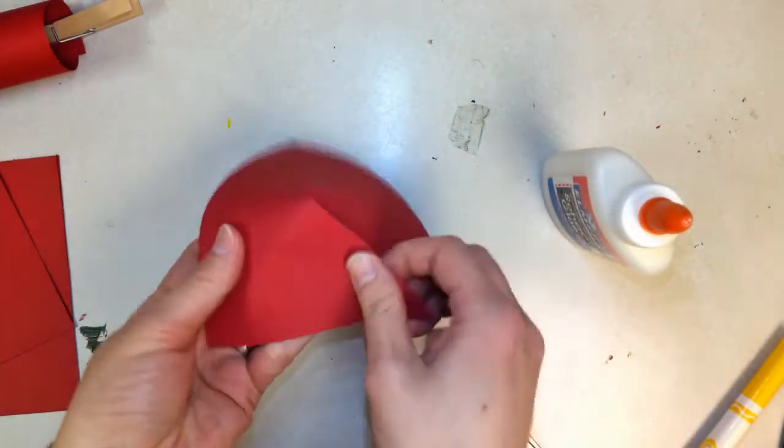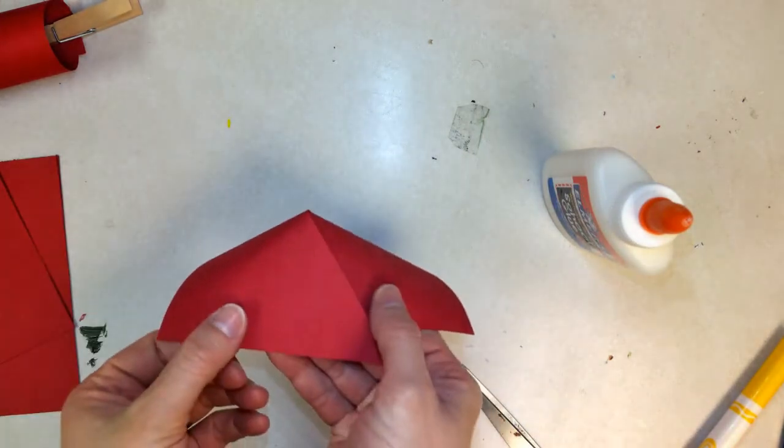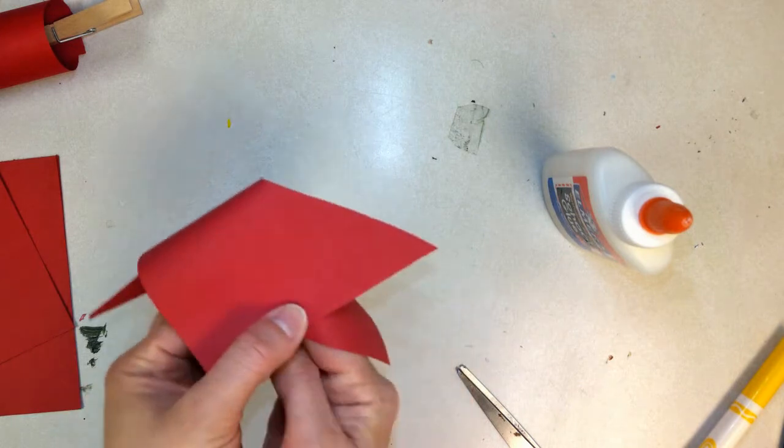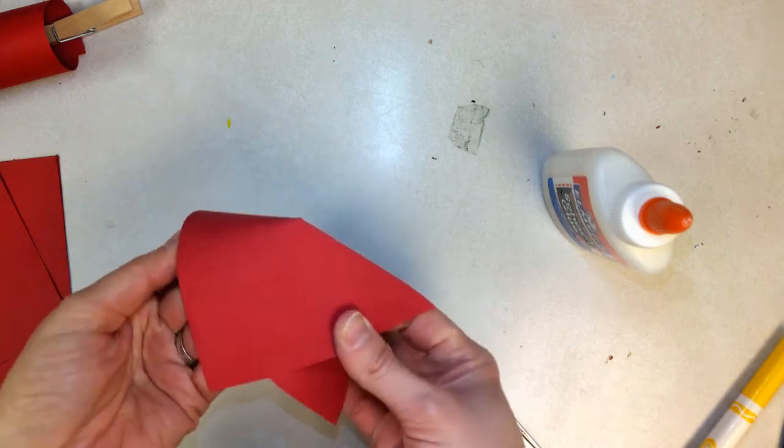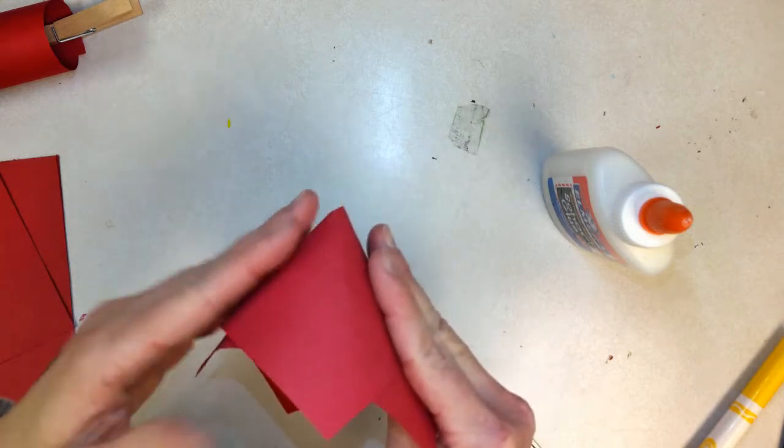If you want a flat cone or an obtuse cone, make it kind of loose. If you want an acute cone, pull it in tighter and you can see it's more narrow.